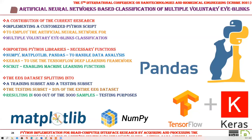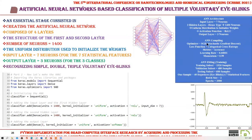The EEG dataset was split into training and testing subsets. The testing subset constituted 20% of the entire EEG dataset, resulting in 600 out of the 3,000 samples for testing. An essential stage consisted in creating the artificial neural network composed of four layers. The first and second hidden layers had 1,400 neurons, uniform distribution to initialize weights, and a rectifier linear unit activation function. The input layer had seven neurons corresponding to the seven statistical features. The output layer had three neurons corresponding to simple, double, and triple voluntary eye blinks.